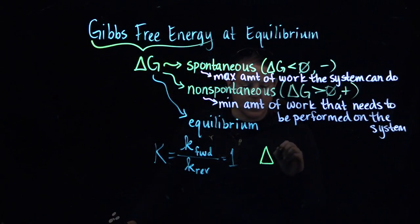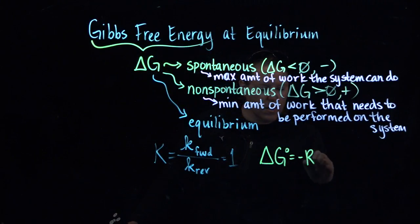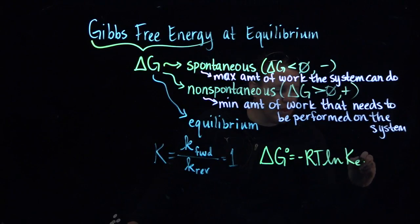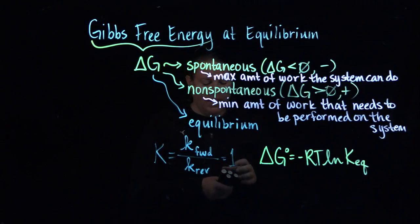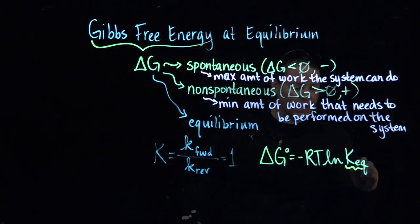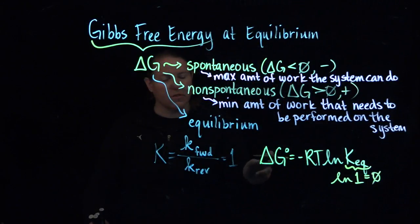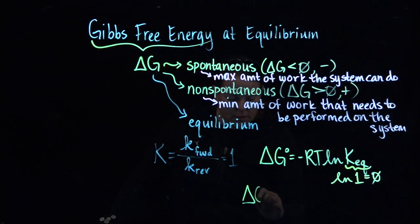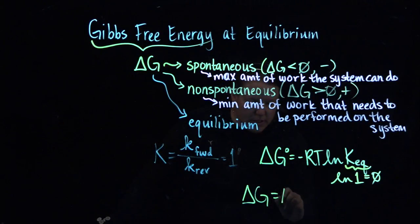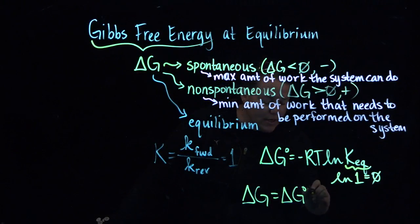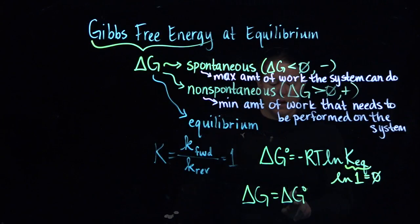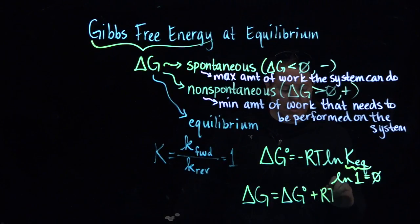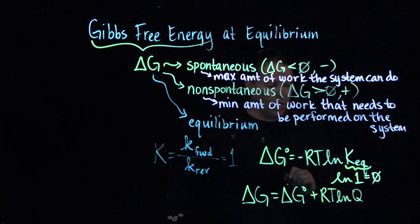We know that we can calculate delta G, at least at standard conditions, by plugging it into this equation. And what happens if K is one? If this becomes one, then we know the natural log of one is actually equal to zero, which makes sense as to why delta G is zero. If you want to do it at non-standard conditions, we know delta G naught factors into the delta G that's at non-standard conditions. So we have delta G here, and then we have plus RT natural log of Q.